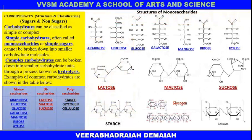Carbohydrates — structures and classifications — are concerned with sugars and non-sugars. The structures which are going to be discussed today are arabinose, fructose, glucose, galactose, mannose, ribose, and xylose, which are considered as simple sugars in the carbohydrates.